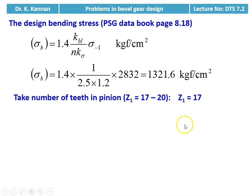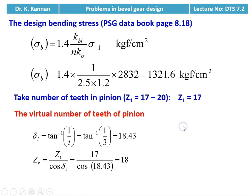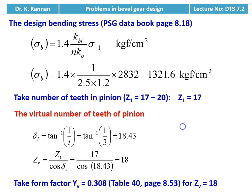We take the number of teeth for the pinion: Z1 = 17. We calculate the virtual number of teeth on the pinion: δ1 = tan⁻¹(1/i) = tan⁻¹(1/3) = 18.43°. ZV = Z1 / cos δ1 = 17 / cos 18.43° = 18. We take the form factor YV = 0.308 for ZV = 18, from table number 40, page number 8.53.